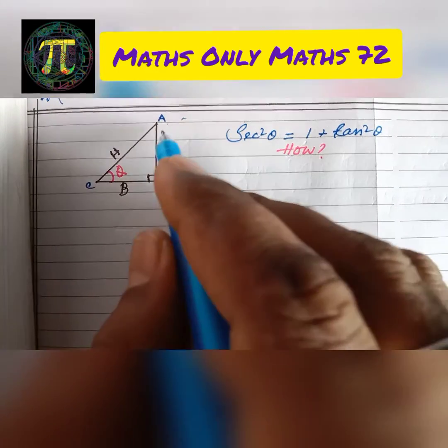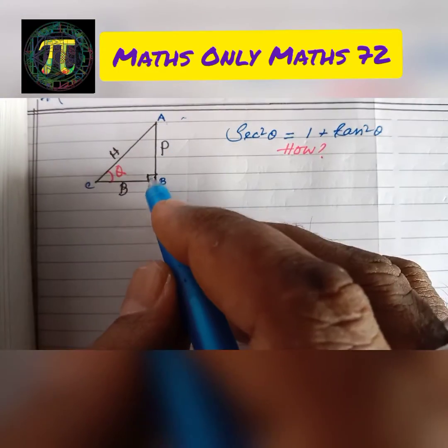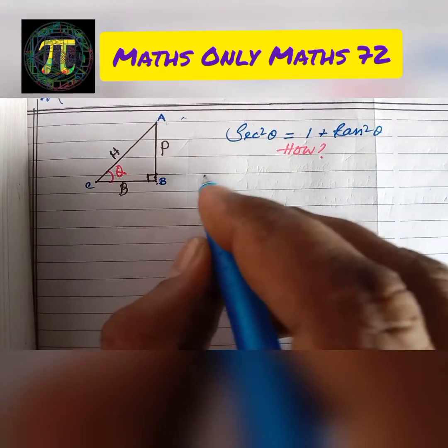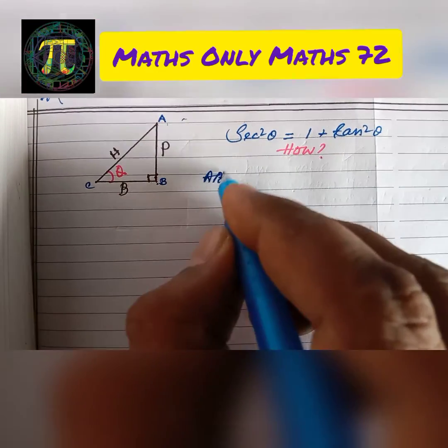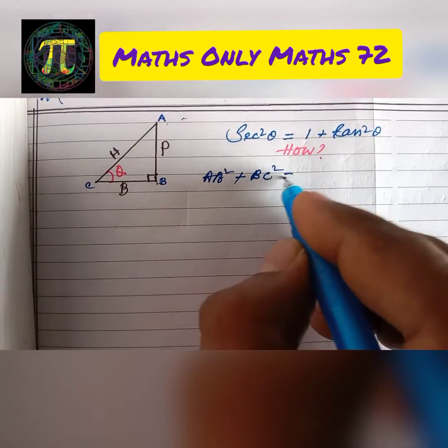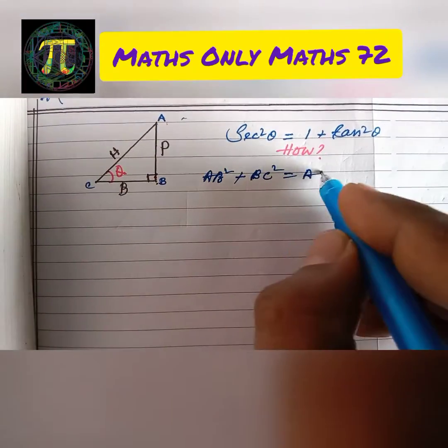So here in right angle triangle ABC, angle B is 90 degrees and let angle C be theta. Therefore, perpendicular squared (AB squared) plus base squared (BC squared) equals hypotenuse squared (AC squared).